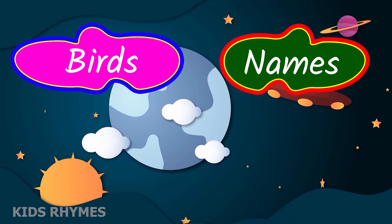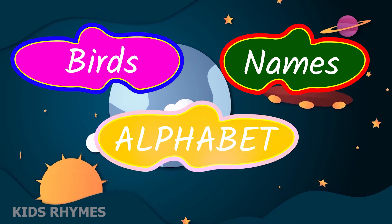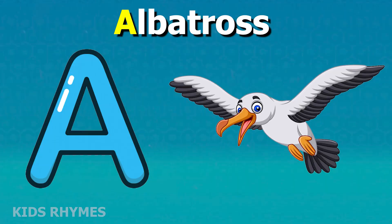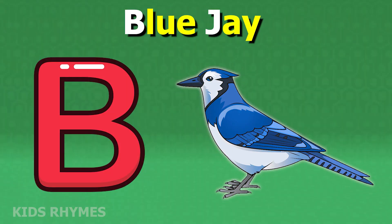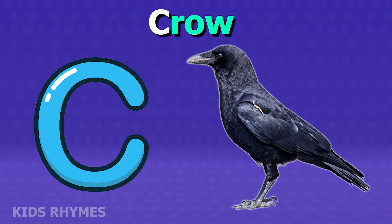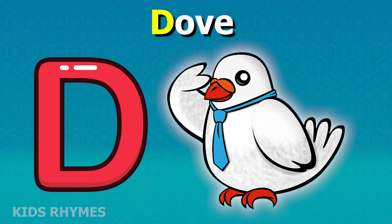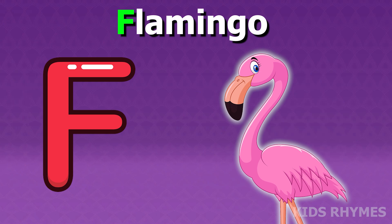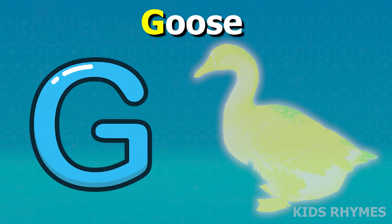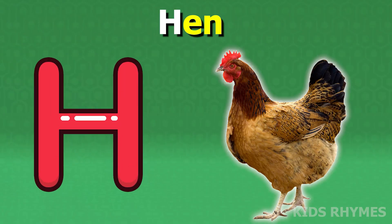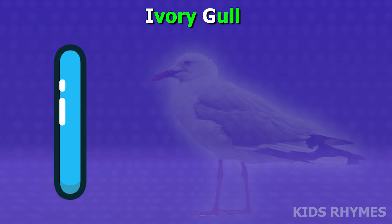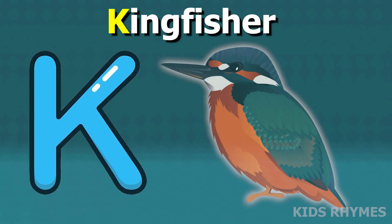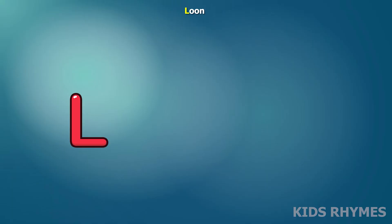Bird's name according to alphabet: A for albatross, B for blue jay, C for crow, D for dove, E for eagle, F for flamingo, G for goose, H for hen, I for ibis, J for jay, K for kingfisher, L for loon.